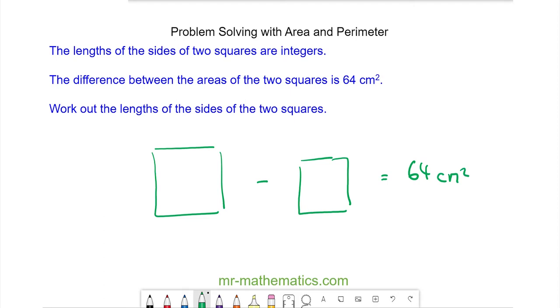So we need two square numbers where the difference is 64, and this would be 100 take away 36.